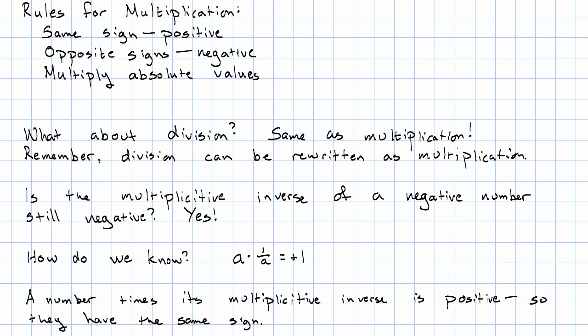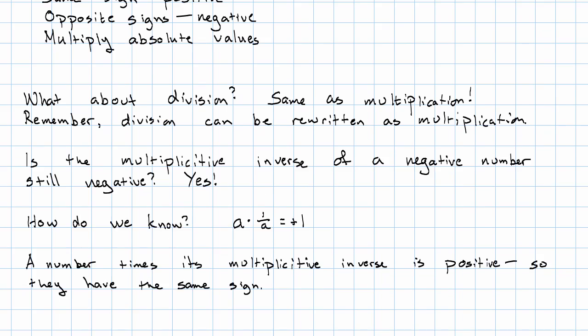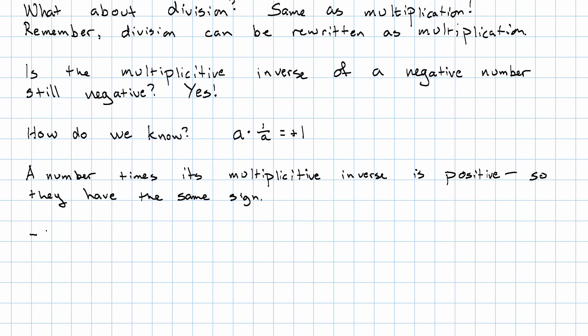What does that mean? Let's say I wanted to take negative 20 divided by negative 5. I could take negative 20 times what's the multiplicative inverse of negative 5? It's negative 1 fifth. That's going to be positive 20 over 1 times 1 over 5.